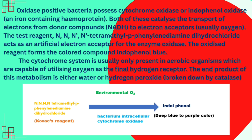This color change indicates an oxidase-positive organism. Suppose bacteria have intracellular cytochrome oxidase present — they are oxidase positive. When we look at oxidase-negative organisms, there is no such color change.